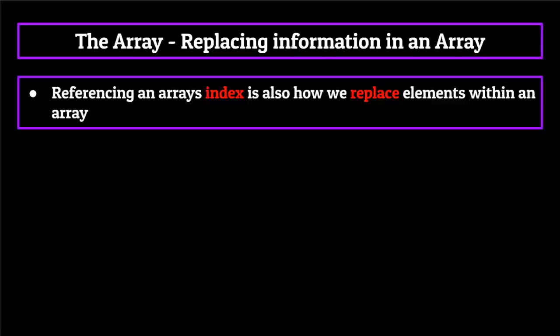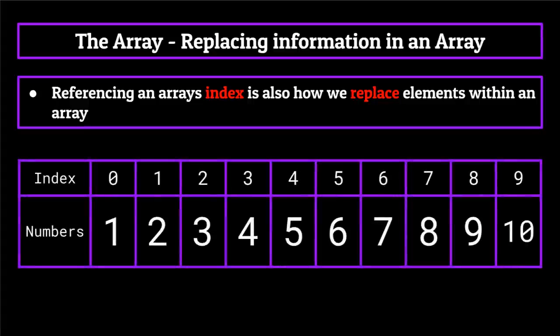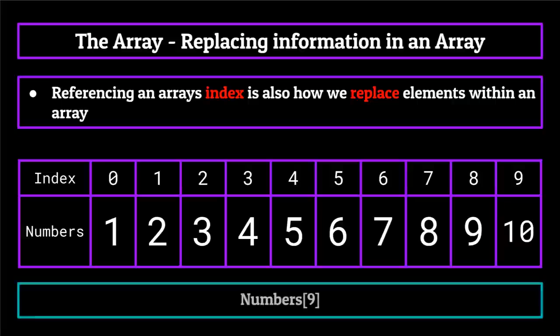Referencing an array's index number is how we actually replace elements within the array as well. Let's say we wanted to change the last element — the integer 10 — to be the integer 11 instead. What we would do is reference the ninth index of the numbers array, the one which currently contains the integer 10, and set it equal to 11. This tells the computer to take the element at index nine and replace it with the integer 11, essentially swapping 10 for 11.